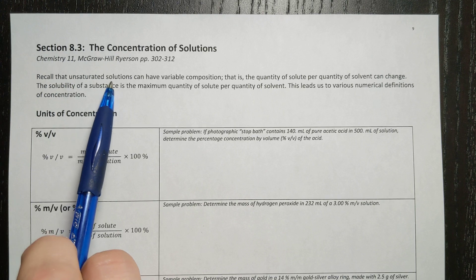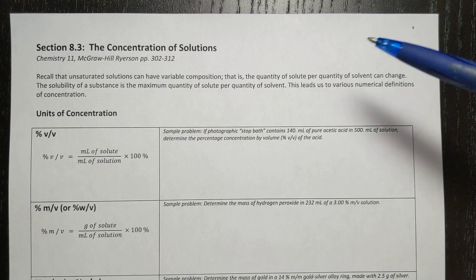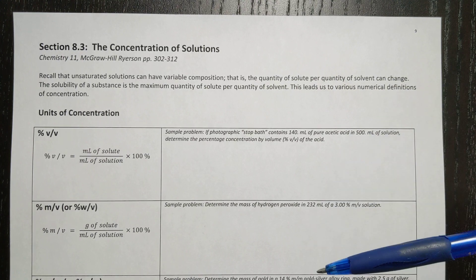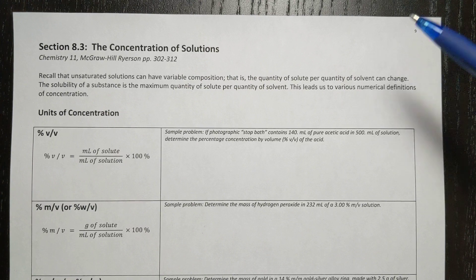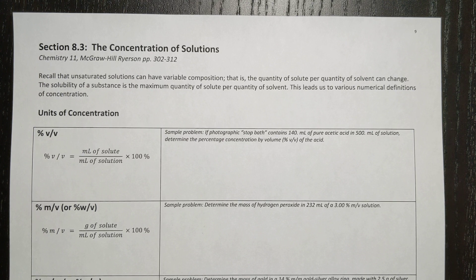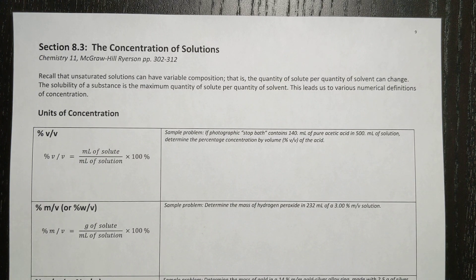Recall that unsaturated solutions can have variable composition. So that was a definition you had to do at the beginning of the unit, but if you forget what that means, the quantity of solute per solvent can change. You can have a glass of water and you can dissolve one teaspoon of sugar, or you could dissolve two teaspoons of sugar, or you could dissolve three teaspoons of sugar. That would mean you have different concentrations of sugar in each different glass. So variable composition means that if it's unsaturated, there are many different possible concentrations that you can have.